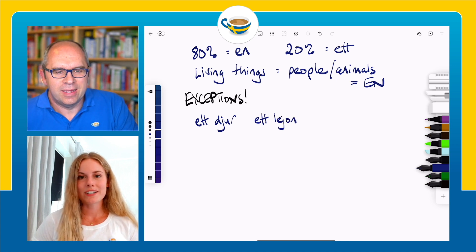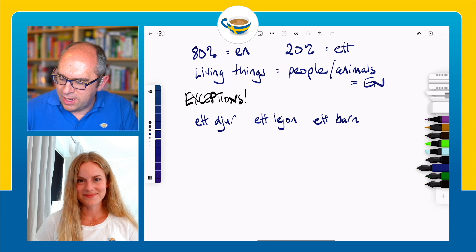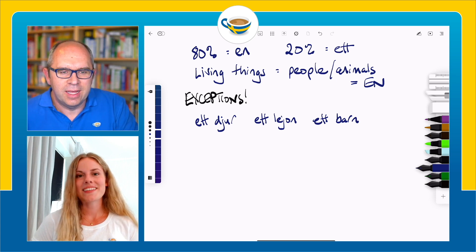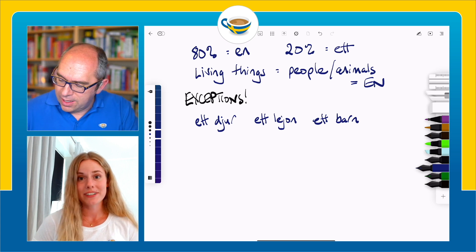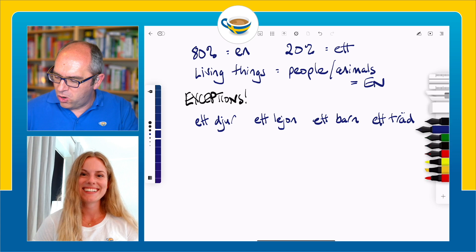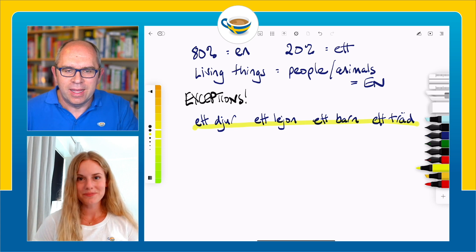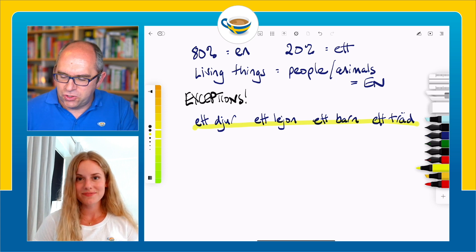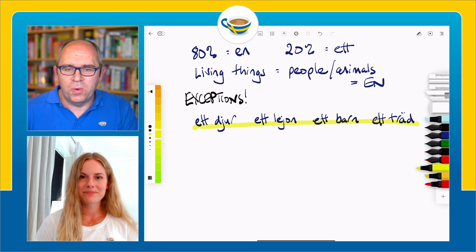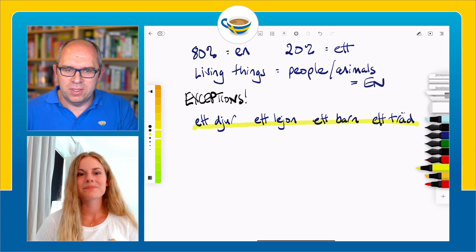We also have 'a child' — ett barn — something we've come across many times in Coffee Break Swedish. So a child is also an ett-word. And then we have ett träd, which is 'a tree.' So even though these are living things, they are still ett-words. Let's go through them one more time: an animal — ett djur; a lion — ett lejon; a child — ett barn; and a tree — ett träd.